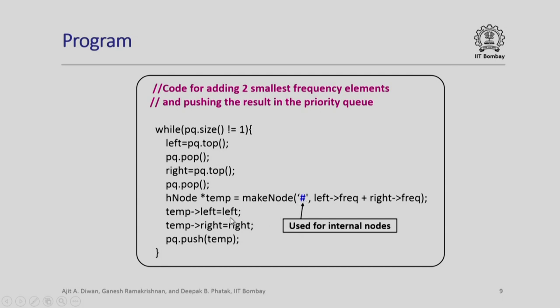Next, we assign left to temp left and right to temp right and push back this again onto the priority queue. What has happened?